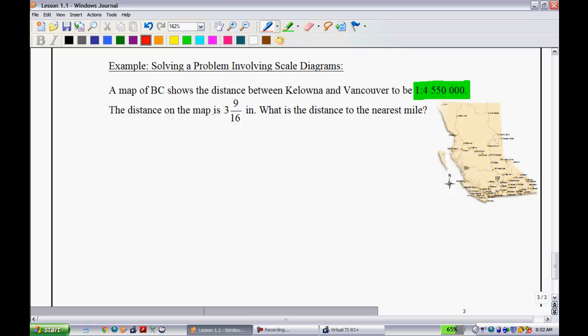So if we see that the distance on the map is 3 and 9 sixteenth inches, then in reality, if we want to figure out how many inches that is, we would just multiply it by that 4.55 million. So that's what I'm going to do right here. So let's take 3 and 9 sixteenth inches, and let's multiply it by 4.55 million.